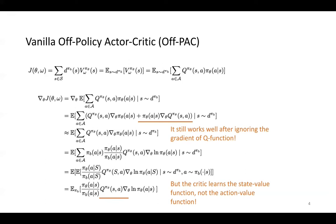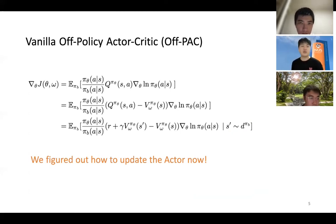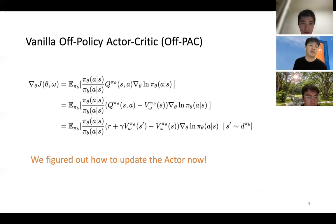The critic learns the state value function. So we need to modify the Q function to the state value function. We can do a subtracting baseline function trick — we subtract the V function and approximate this subtraction with the TD error.